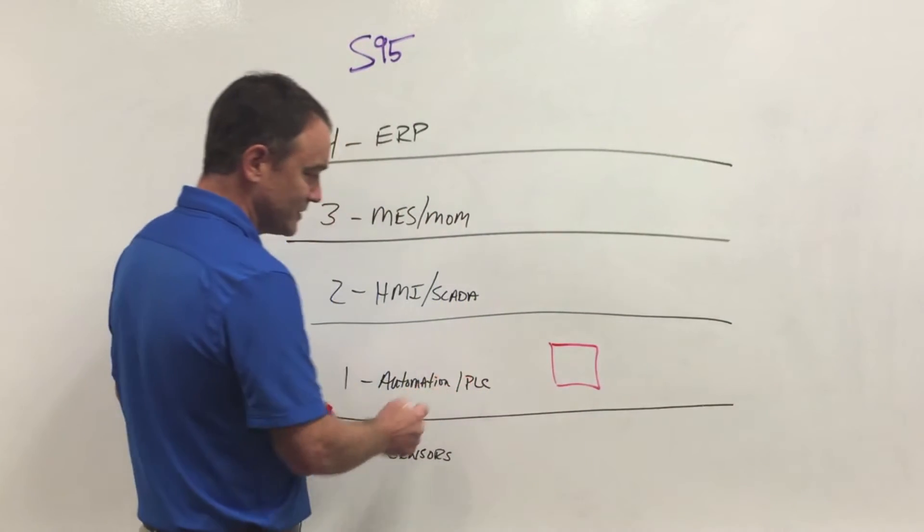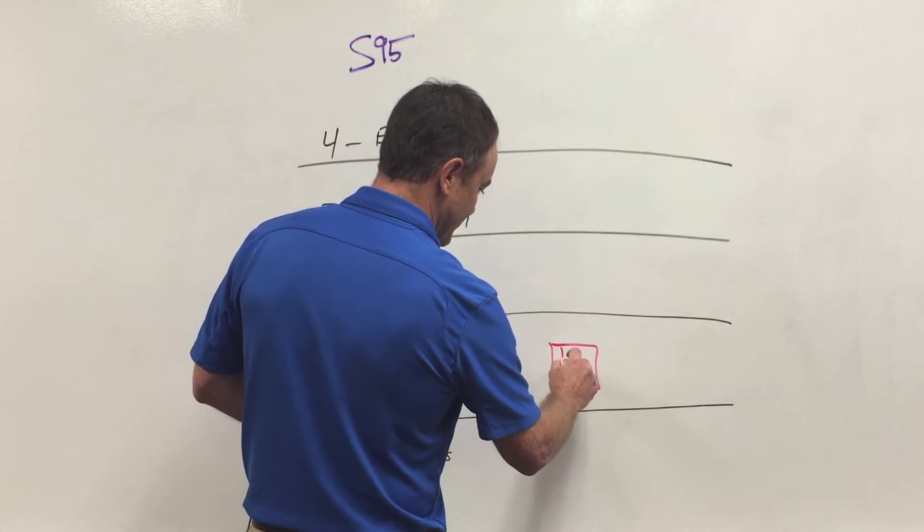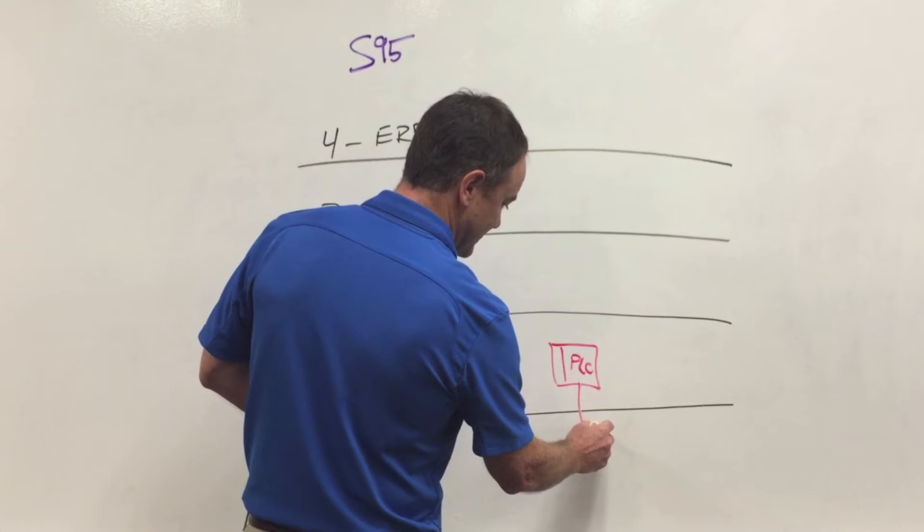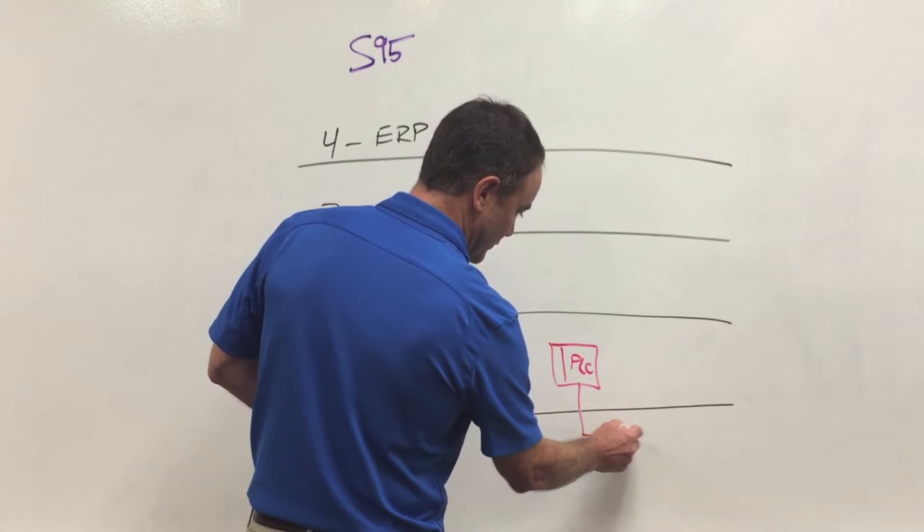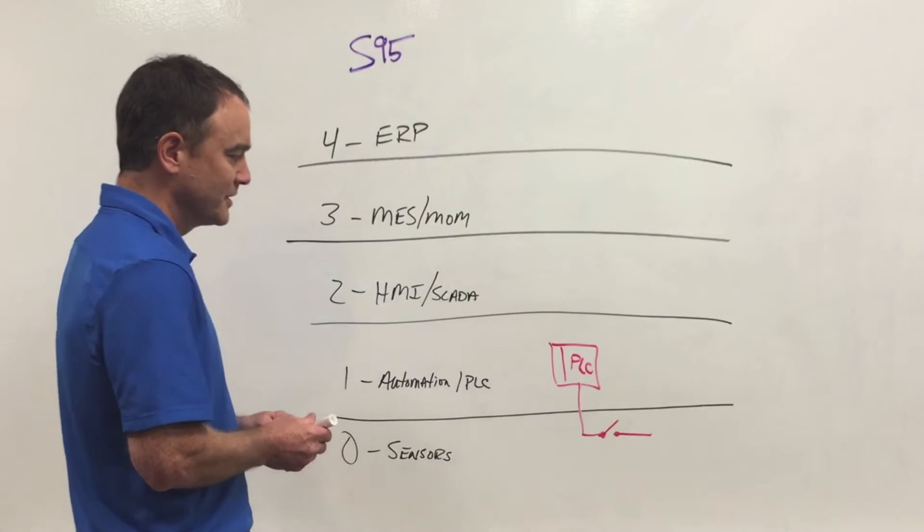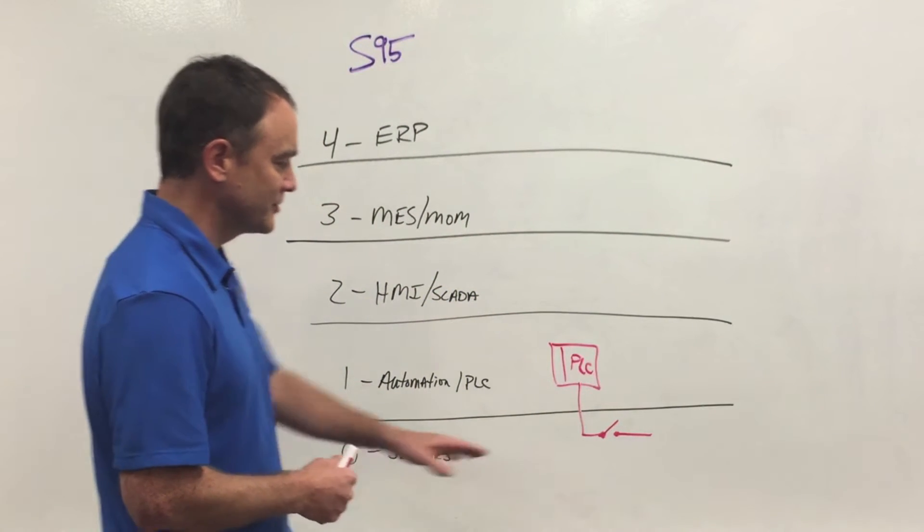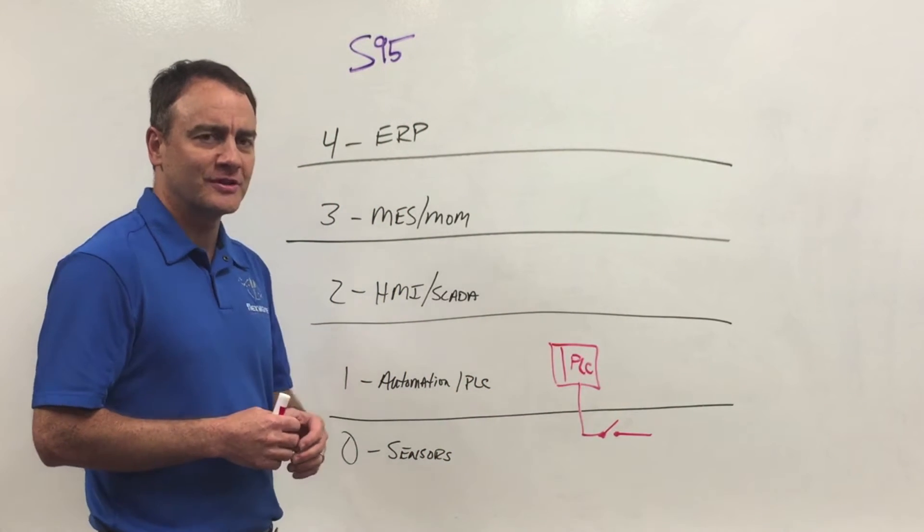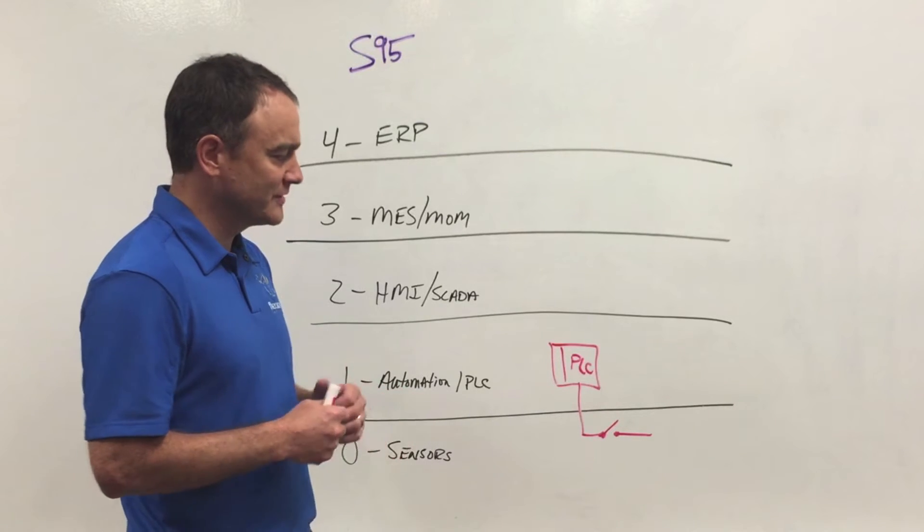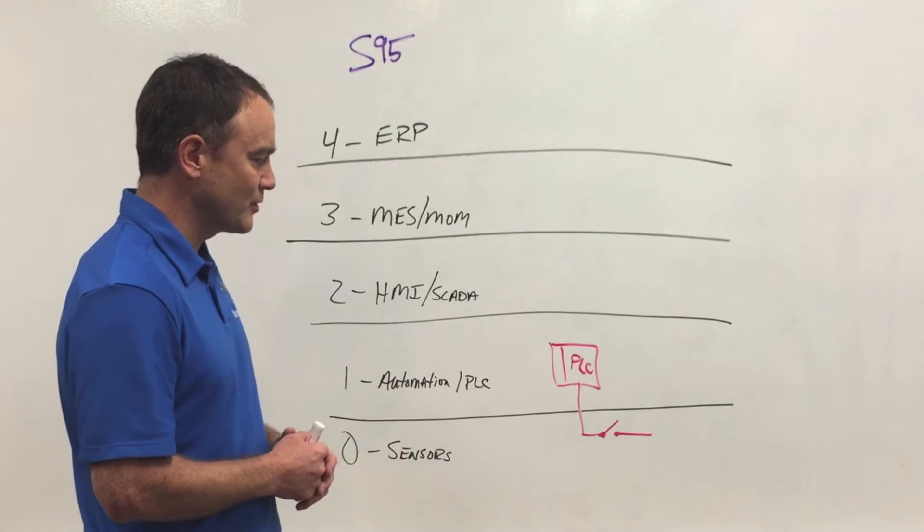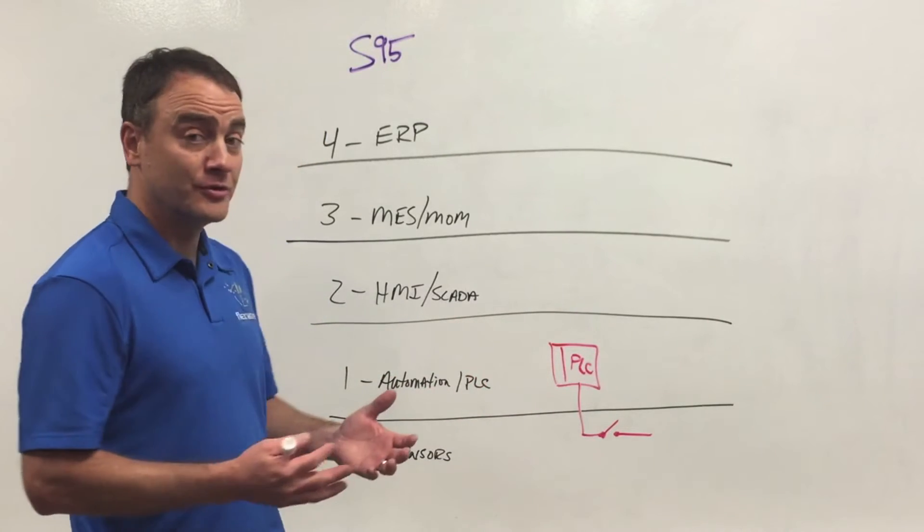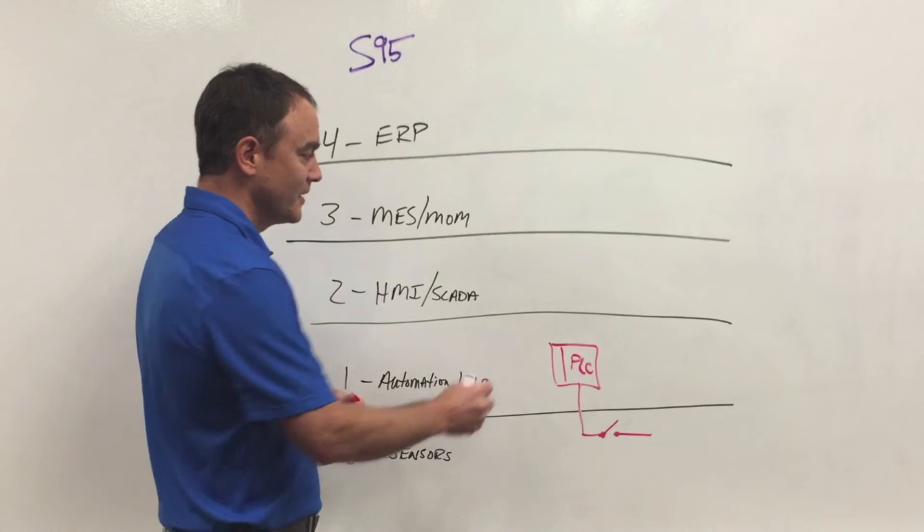In this PLC and automation layer, we have these devices called PLCs, programmable logic controllers, and they tie into sensors out in the world, or in the factory, or it could be in the oil gas field or wherever. A simple limit switch drawn here, but we're looking at thermocouples, pressure sensors, all kinds of inputs and outputs that tell us what's going on in the environment that we're monitoring, and then the PLC can make decisions about what to do in those situations.